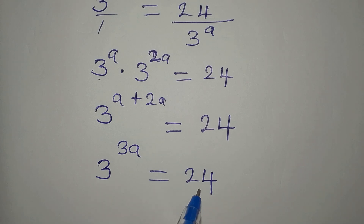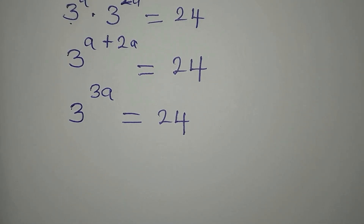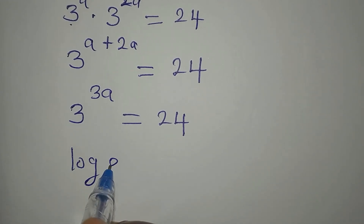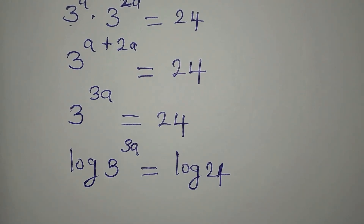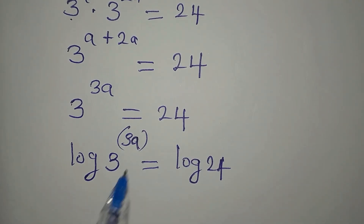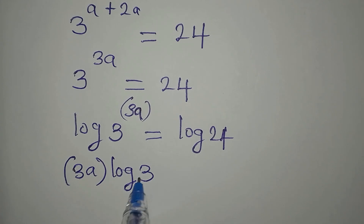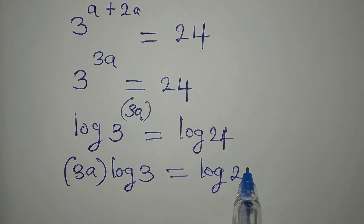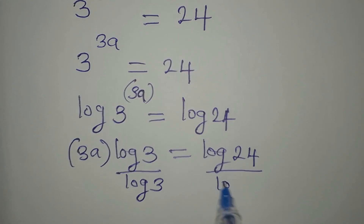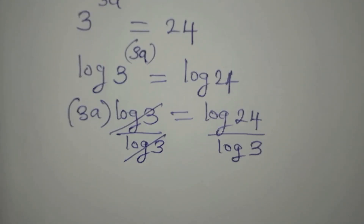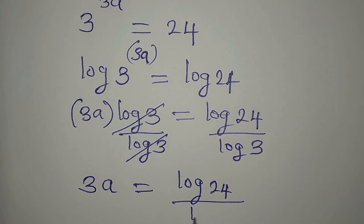At this point, since we cannot express 24 in that form, we will take the log of both sides. So we have log of 3 to the power of 3a equals log of 24. The power 3a can come in front, so that we have 3a multiplying log 3. Then on the other side we have log of 24. If we divide both sides by log of 3, we get 3a equals log 24 divided by log of 3.